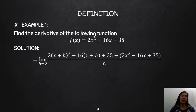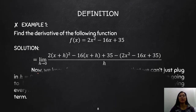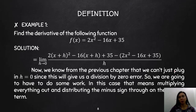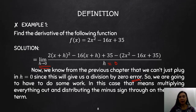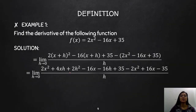Now we know from the previous chapter that we can't just plug in h = 0, because that would make the denominator 0, and division by zero gives an error. So we do some simplification to get rid of this h. What we did was expand and distribute the 2, and this is the result: 2x² + 4xh + 2h² − 16x − 16h + 35.